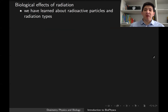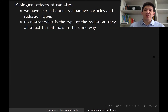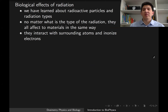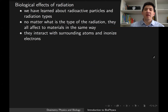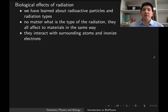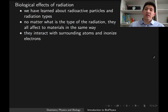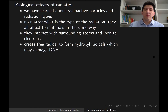In the previous lectures we talked about radiation, the types of radiation, the types of radioactive particles, and we learned that in all of them they affect our body in the same way. They ionize the electrons and create free electrons, which can damage the DNA of our cells. They can do this directly, or indirectly by creating free radicals to form hydroxyl radicals, which can damage the DNA again.